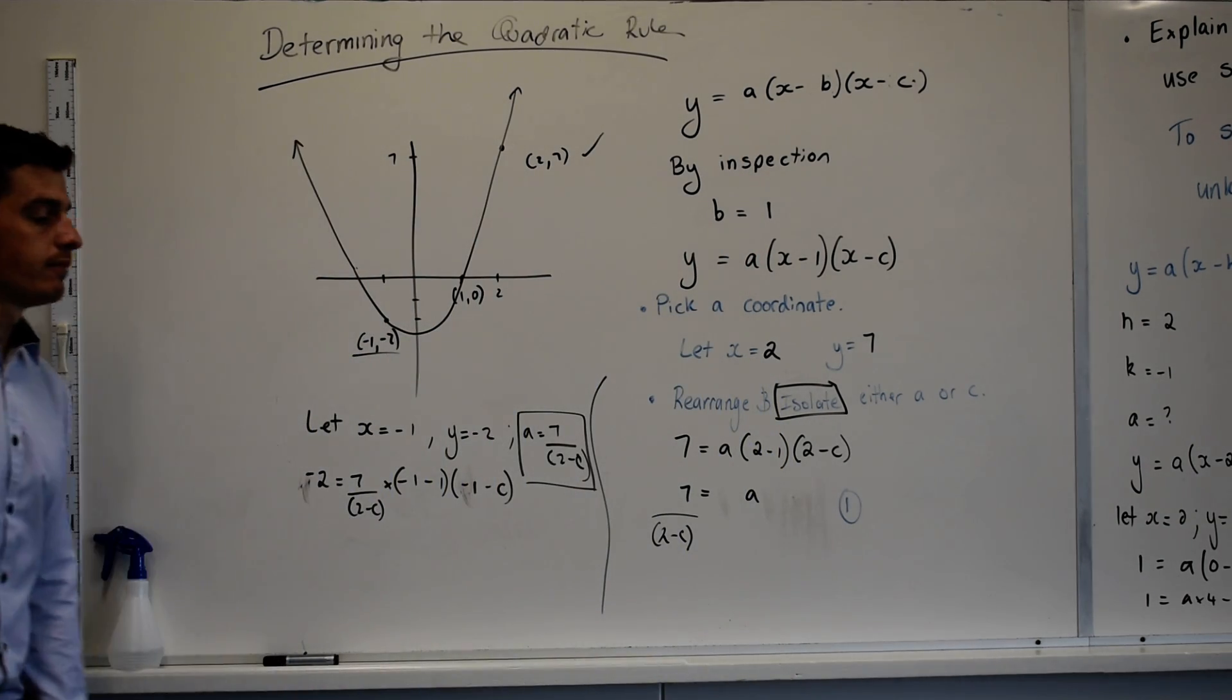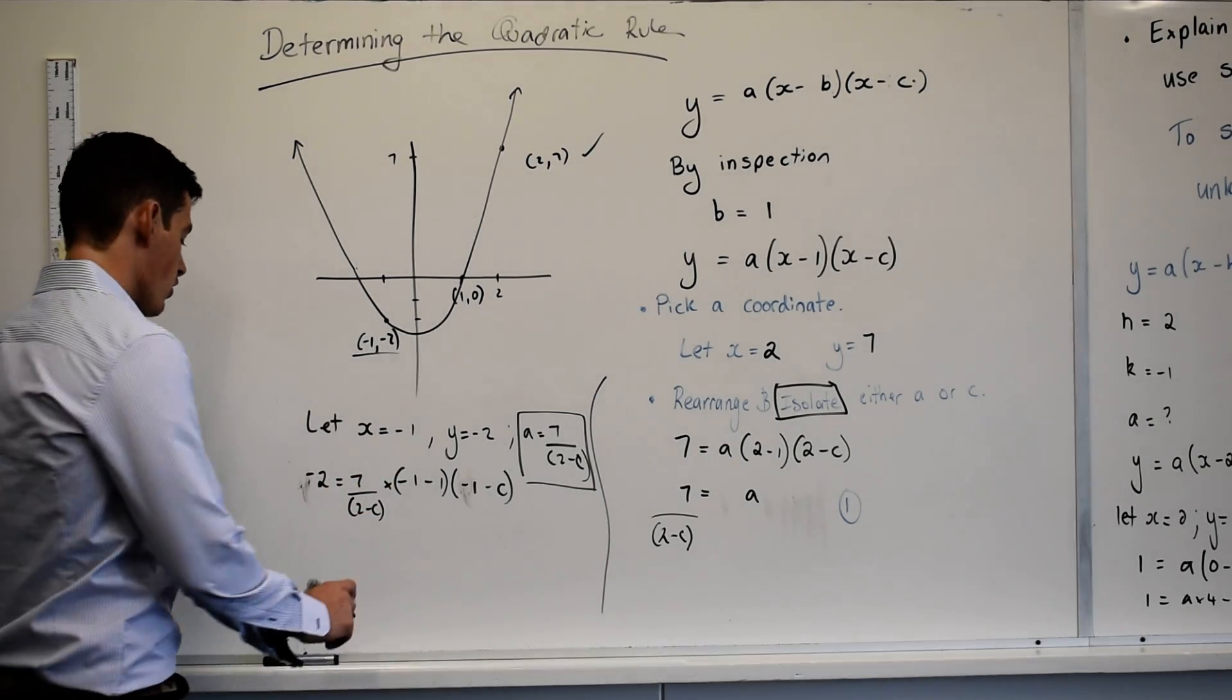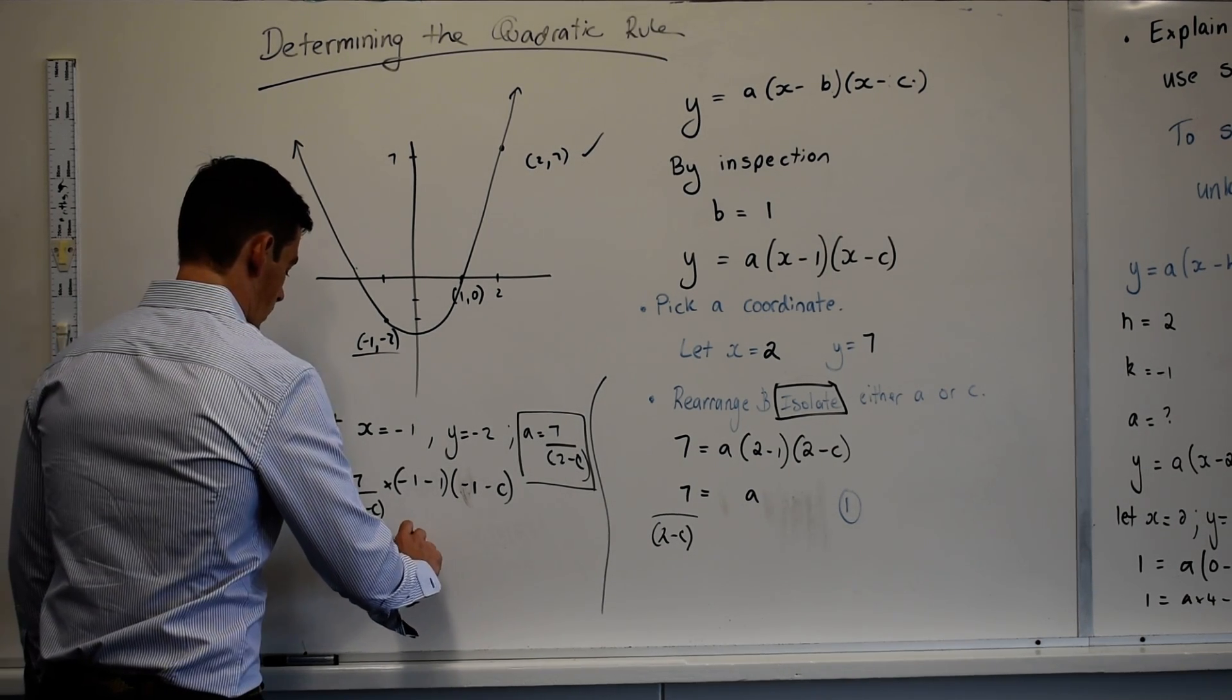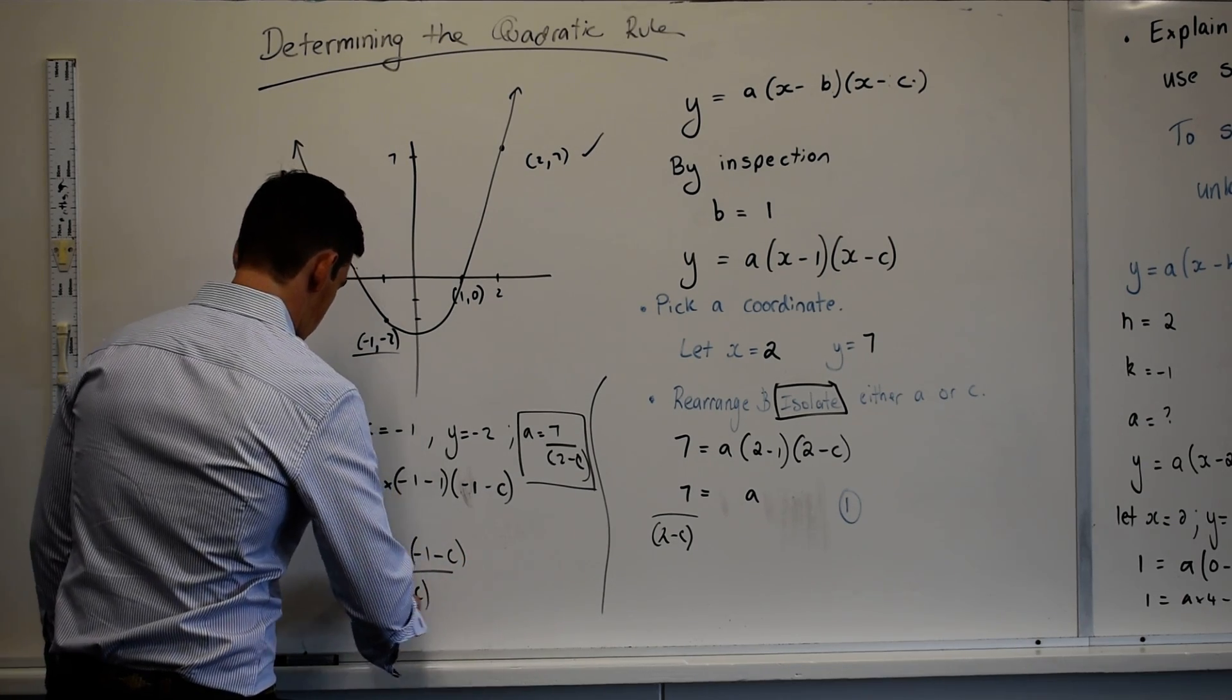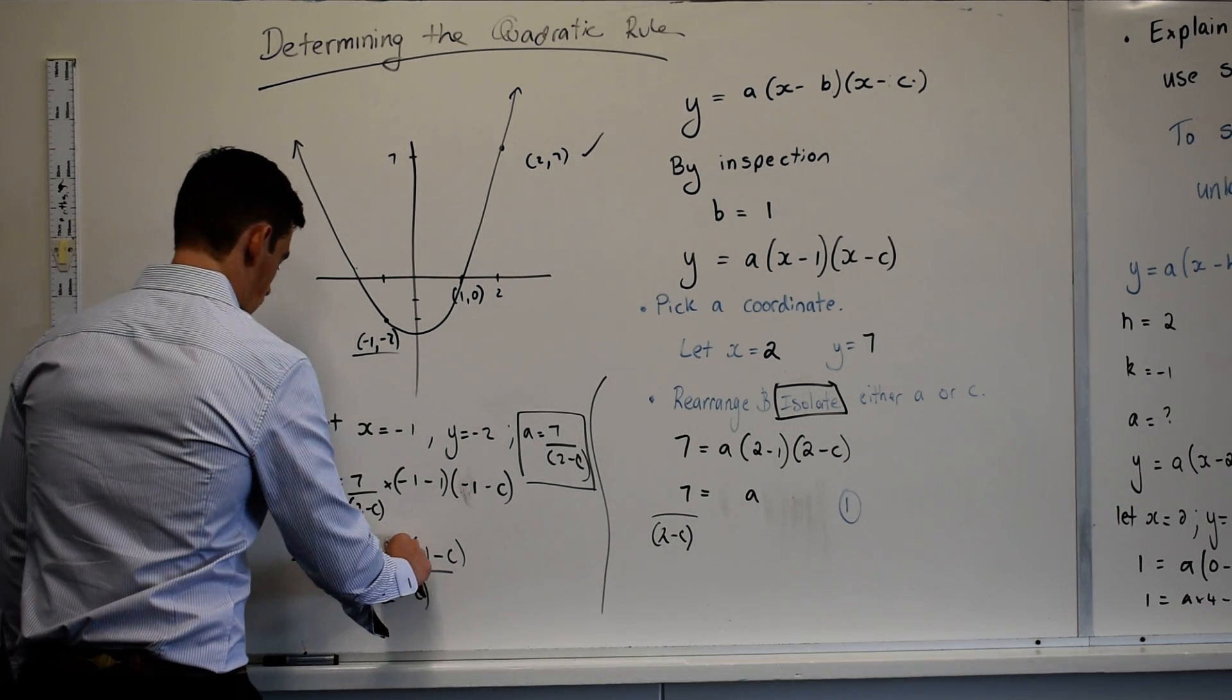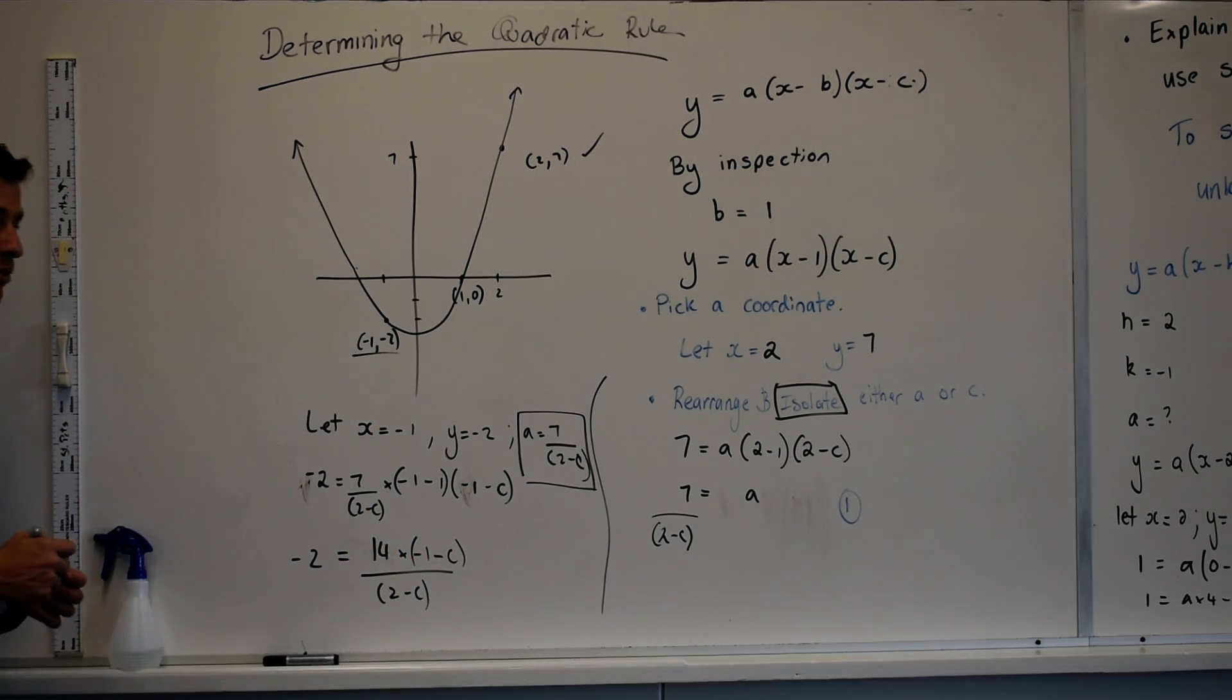So I've just replaced A with 7 over 2 minus C. How many variables do I have in this equation now? It's gross but I've only got one. What's my variable? C. So I've got 7 times negative 1 minus C over 2 minus C equals negative 2. What can I write 7 times 2 as? 14. And if our algebra wasn't great and we were a little bit stuck on how we should rearrange it does anyone know what the next step should be?